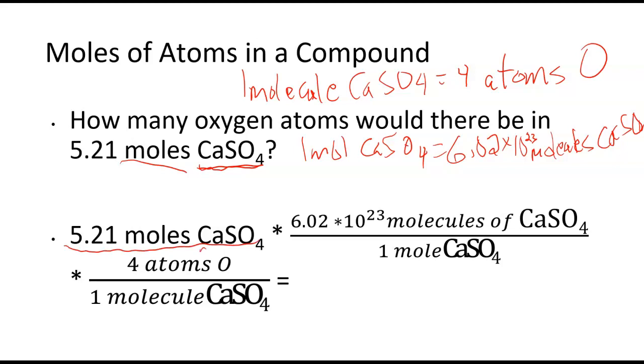Unfortunately, this is on two lines because it's very long. So our moles of calcium sulfate are going to cancel out. That gets us into molecules of calcium sulfate. If I multiply by the four atoms of oxygen for every one molecule of calcium sulfate, the molecules of calcium sulfate cancel out. I'm left with atoms of oxygen.